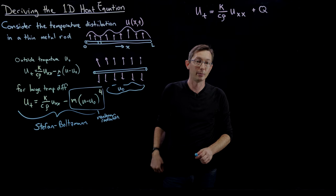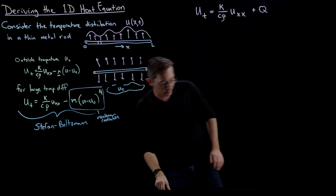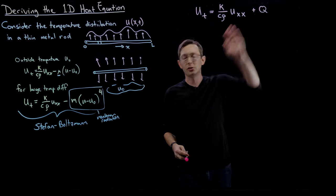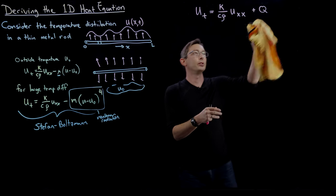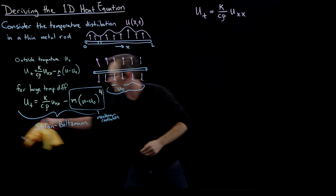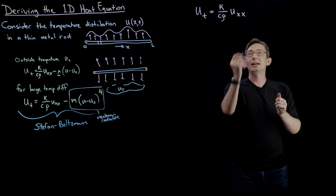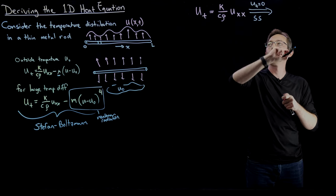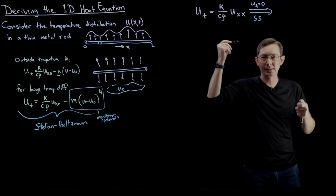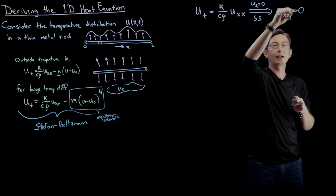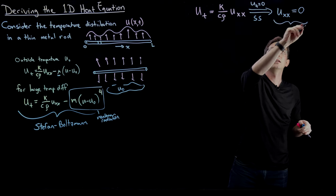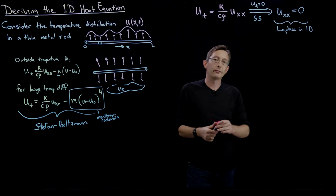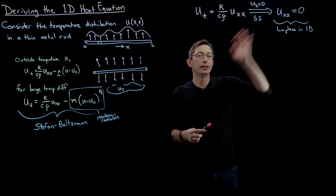For the rest of the lecture, we're going to talk about how to compute steady-state temperature distributions using Laplace's equation. Let's assume no Q — no forcing, an insulated rod — and we just have boundary conditions. In steady state, u_t = 0, so we get Laplace's equation, which in 1D is: u_xx = 0. We're going to solve for the steady-state heat distribution in this thin metal rod using this equation.